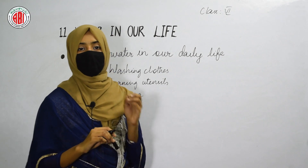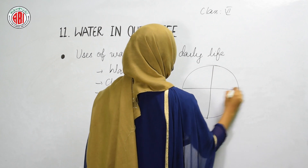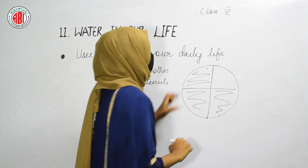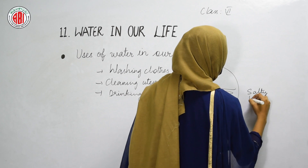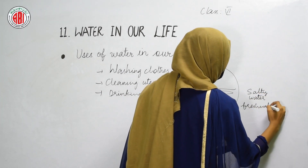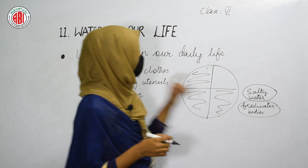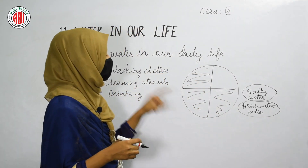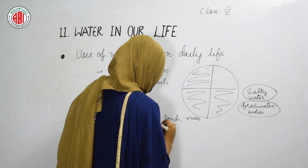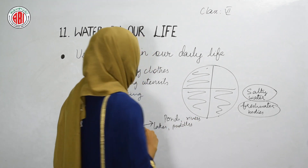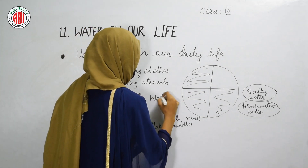Water is an essential component. This is the Earth, and one-third of the Earth is covered with water. Among this one-third part, we have salty water bodies and we also have fresh water bodies. We cannot consume salty water — we can use only fresh water. Fresh water bodies found on the Earth include ponds, rivers, lakes, and puddles. These are called water resources.